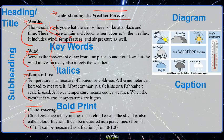Moving on to the picture — do you see the diagram that has all different labels? It has pictures and tells you what the different parts are. This is the caption: the small letters underneath a picture that tell you what you should be looking at — 'weather symbols for cloud coverage.'